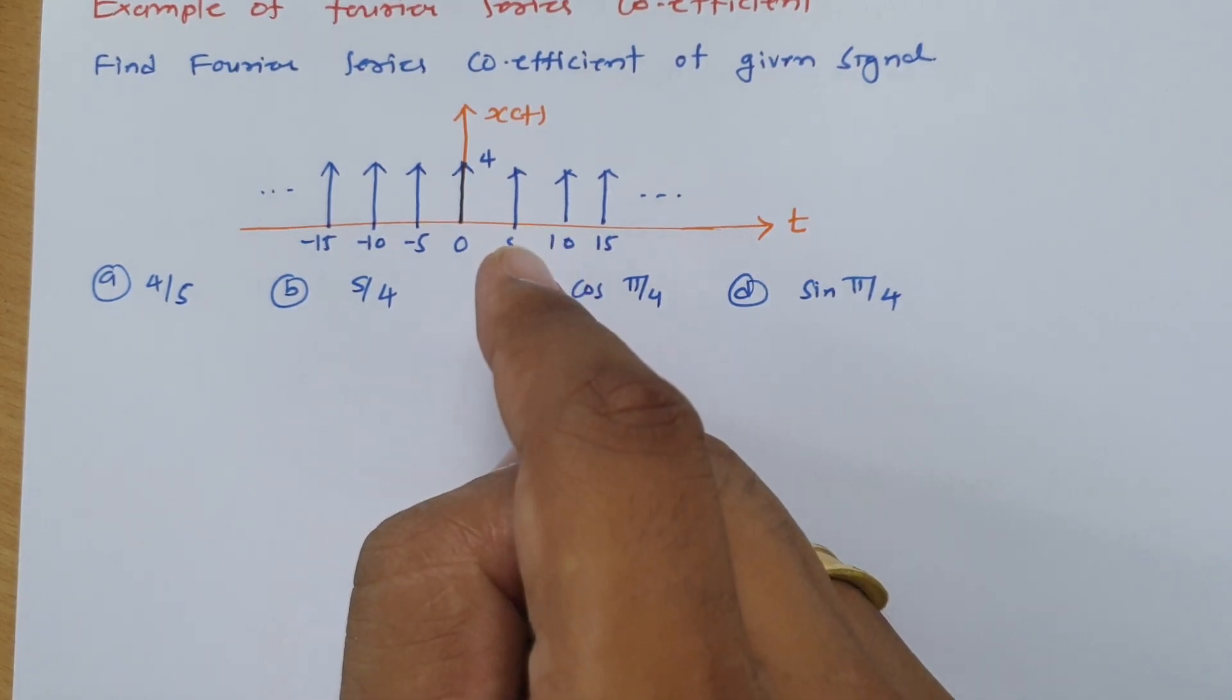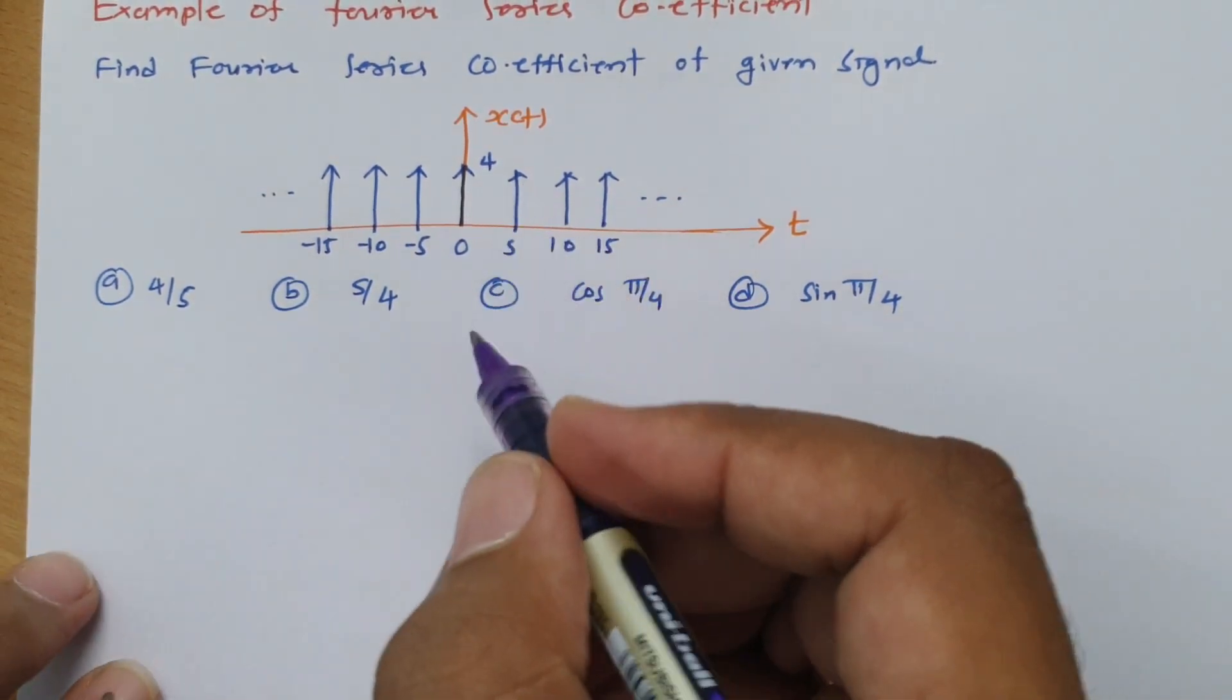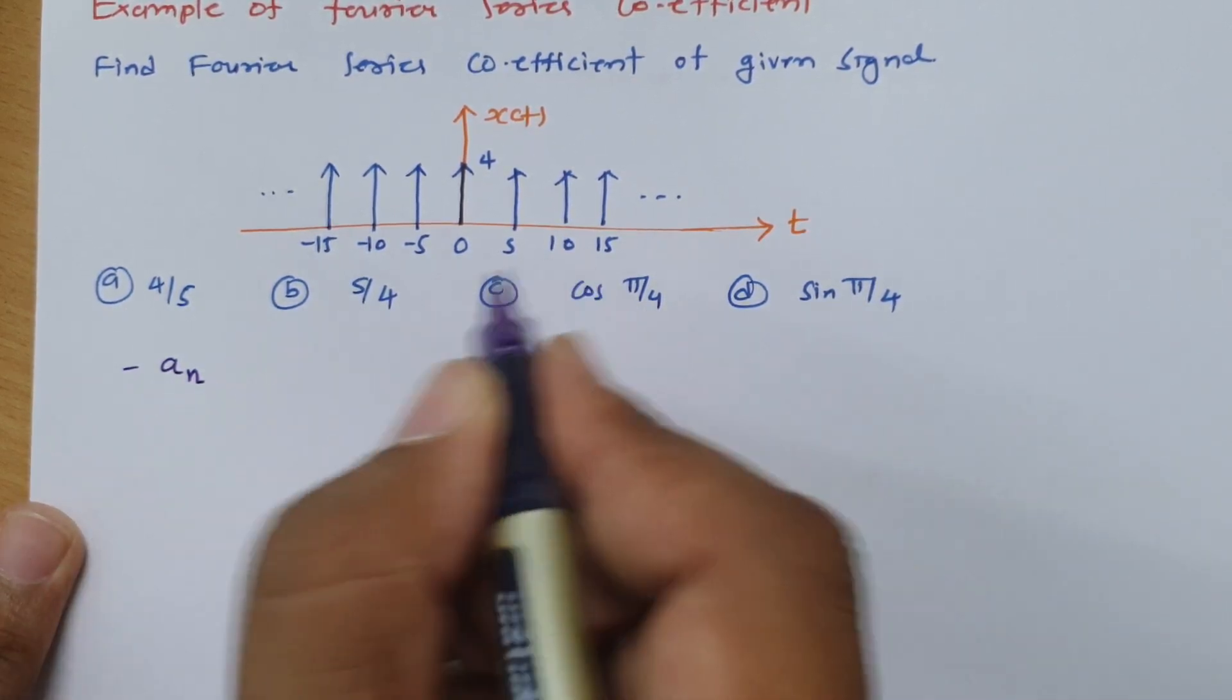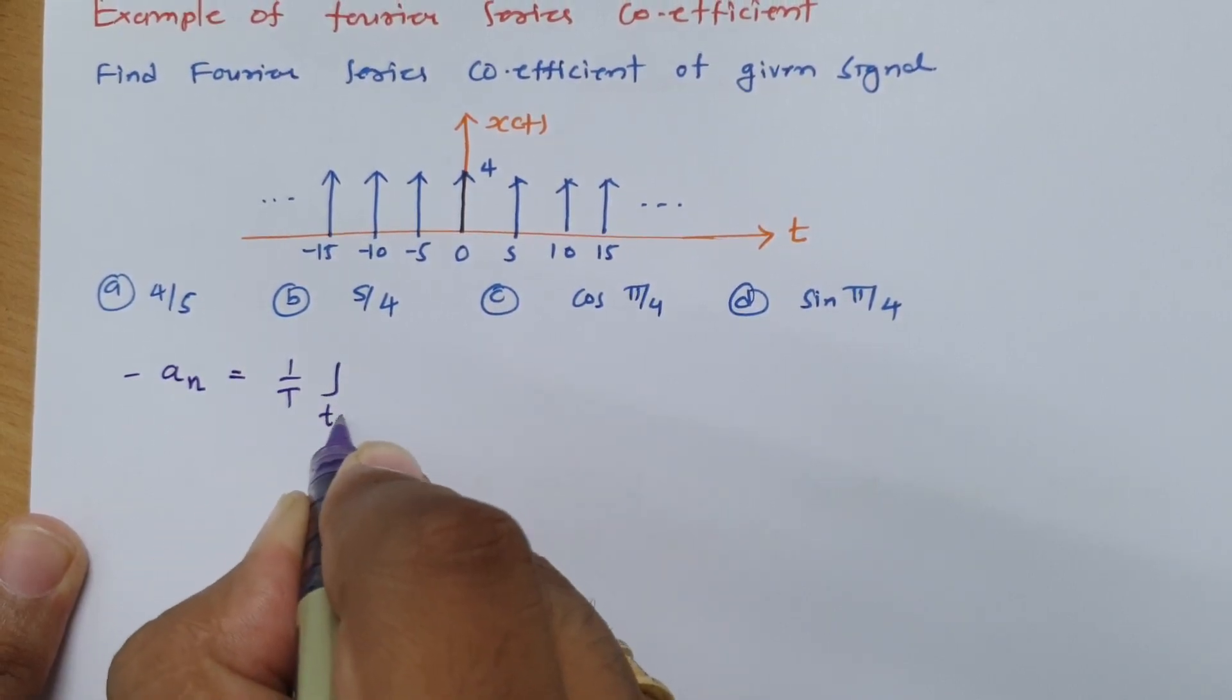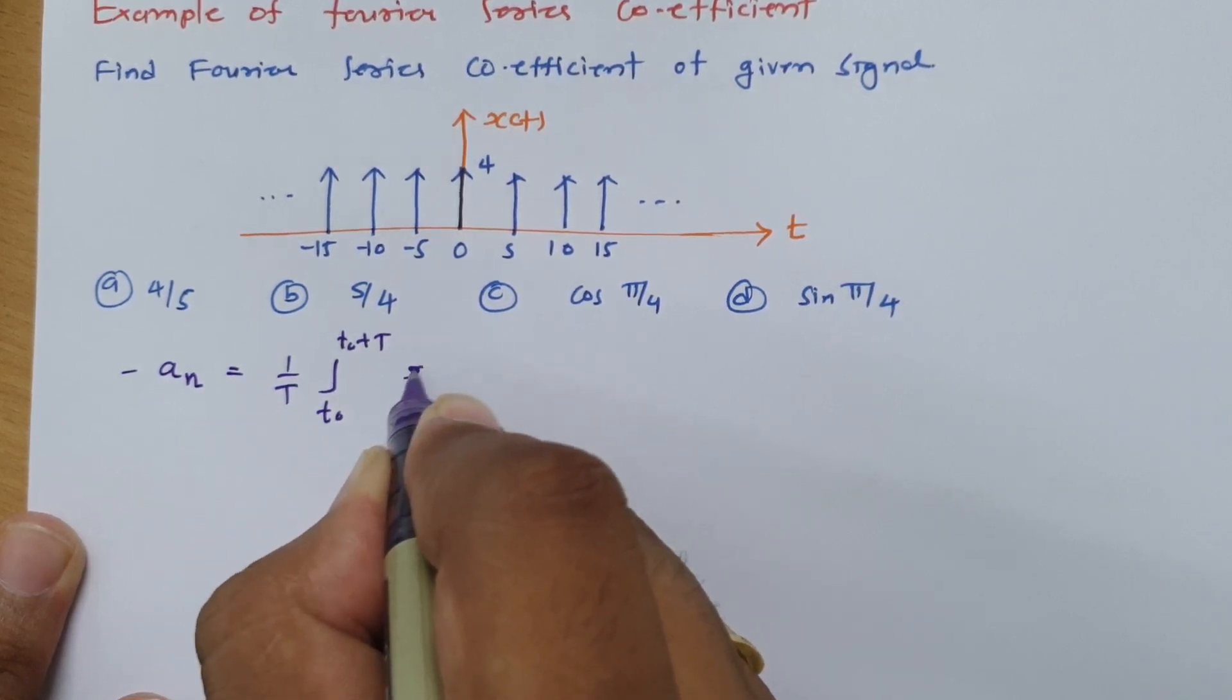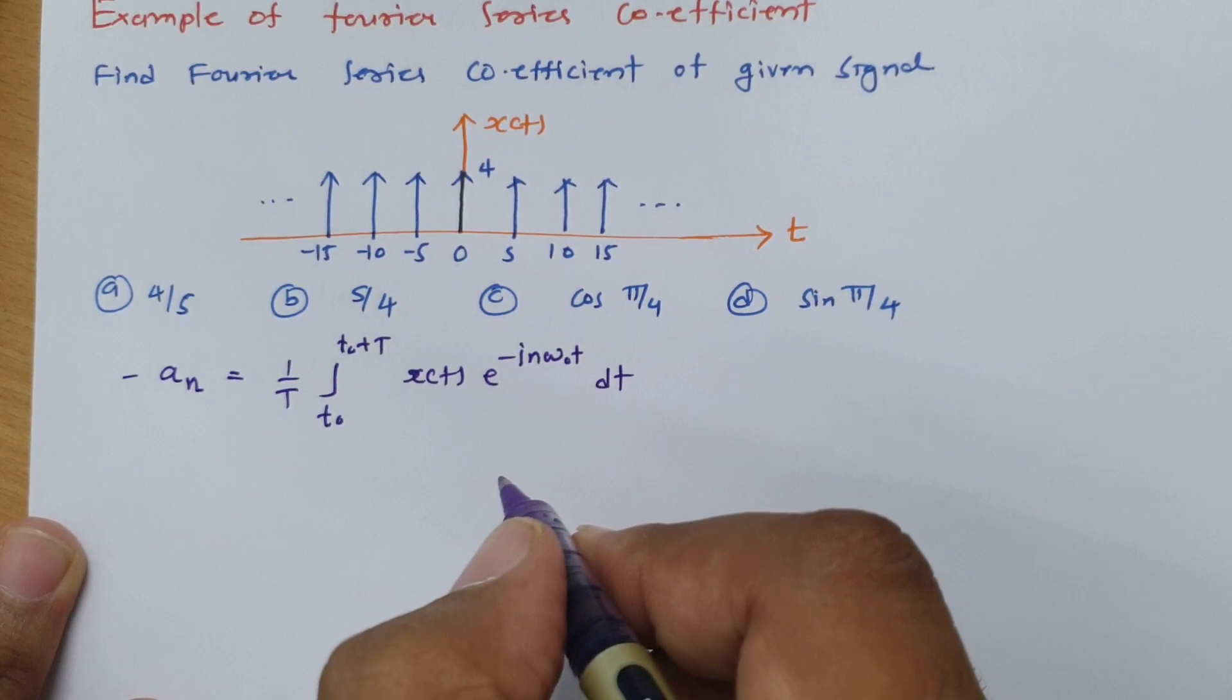So the question is find Fourier series coefficient. We have already seen how to find Fourier series coefficient. The coefficient a_n in exponential Fourier series is: a_n equals 1 by T, integration from t_0 to t_0 plus T, of x(t) times e to the power minus jn omega 0 t dt. This is the basic formula.